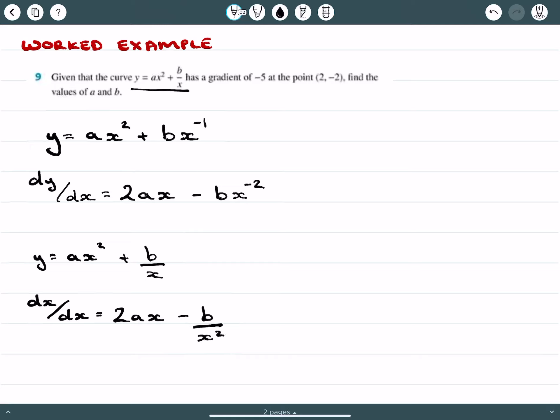Now we need to use the fact that when x equals 2, we have y equals negative 2, but we also have dy/dx equaling negative 5. We can find two equations from this information.